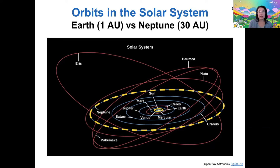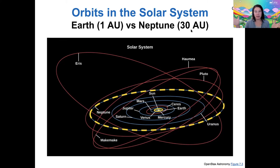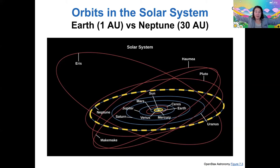Just to give you a sense of scale, the Earth orbits at a distance of one astronomical unit — I'll talk about what that is in a second. Neptune is out at 30. So if you want a numeric bound on the edge of the planetary system, that would be about 30 AU. There's stuff out beyond Neptune, so the solar system itself has a boundary that's much farther away than 30 AU.